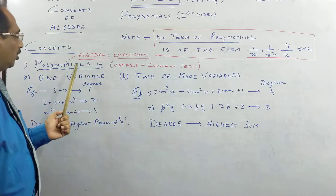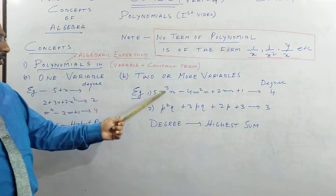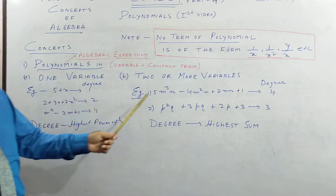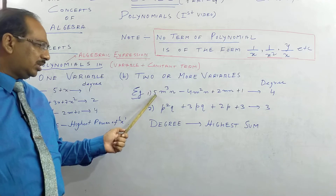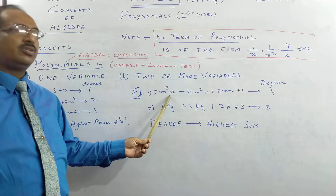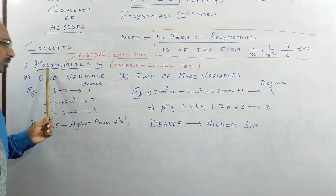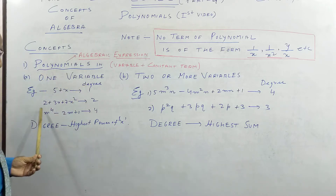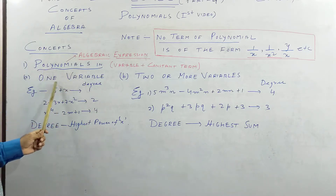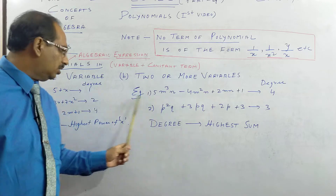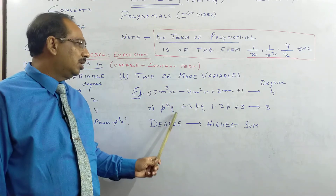Polynomials are nothing but algebraic expressions. These are all polynomial labels — they are variables m, n, p, q, x and constant terms. Constant terms are there, like 5 and 1, and you also have constant terms with variables. We have two types of polynomial: in one variable, where all terms are x or all are y, and polynomials in two or more variables, where you might have m and n, or p and q.